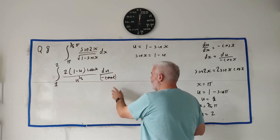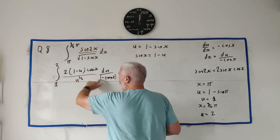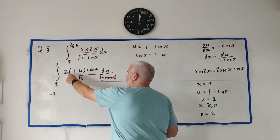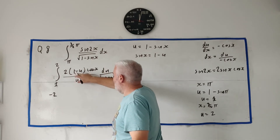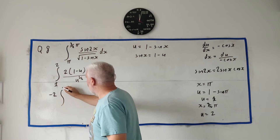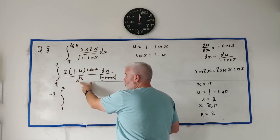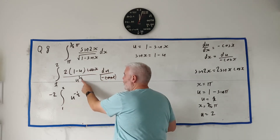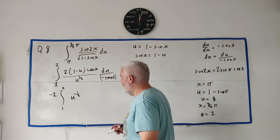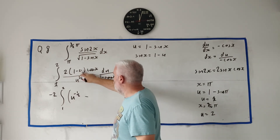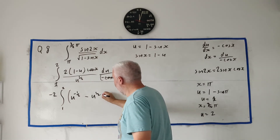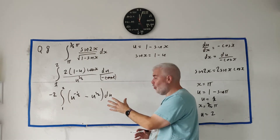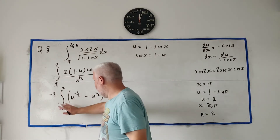Let's clean all this up. We already divided out the cosines. The minus comes all the way outside, and so does the 2, giving us minus 2. We can separate this out into two fractions: 1 divided by square root of u, which I can write as u to the power of minus one half, minus u divided by u to the power of one half, which is u to the power of one half. So instead of that big mess, we have two fairly simple integration expressions.